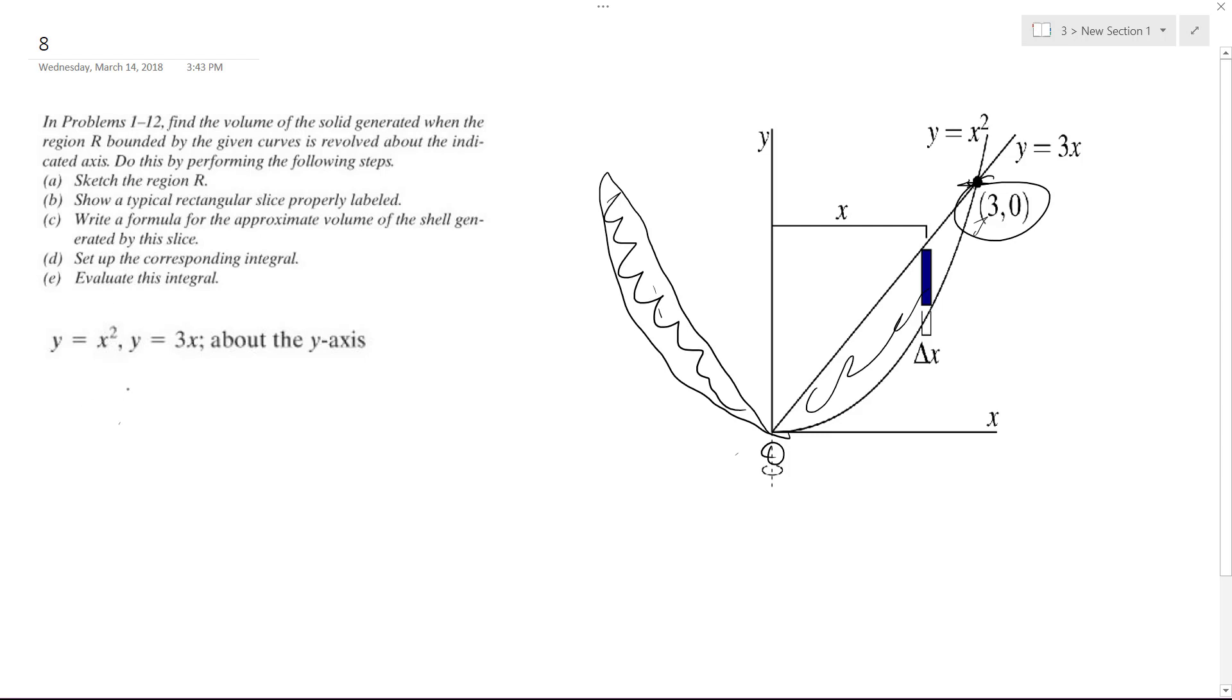So we're using the shell method. In this instance it's just going to be 2πx, and we're integrating from 0 to 3. Our values are going to be 3x minus x squared, so we're going to distribute the x.